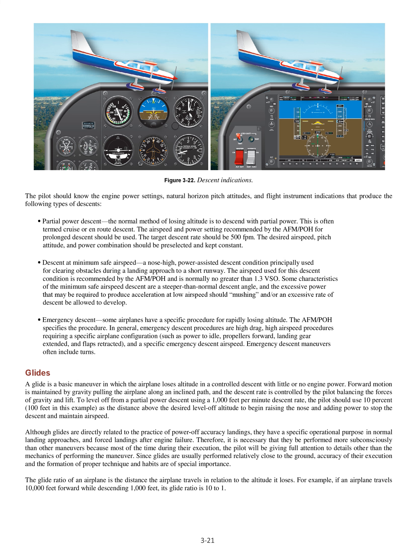Glides. A glide is a basic maneuver in which the airplane loses altitude in a controlled descent with little or no engine power. Forward motion is maintained by gravity pulling the airplane along an inclined path, and the descent rate is controlled by the pilot balancing the forces of gravity and lift. To level off from a partial power descent using a 1,000 feet per minute descent rate, the pilot should use 10% (100 feet in this example) as the distance above the desired level off altitude to begin raising the nose and adding power to stop the descent and maintain airspeed. Although glides are directly related to the practice of power off accuracy landings, they have a specific operational purpose in normal landing approaches and forced landings after engine failure.